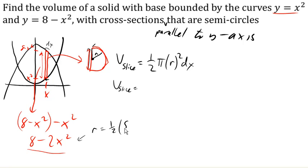Or in other words, it's gonna be 4 minus x squared. So we got 1 half pi times 4 minus x squared squared, right? Because that's r squared squared. And there's the volume for one slice.